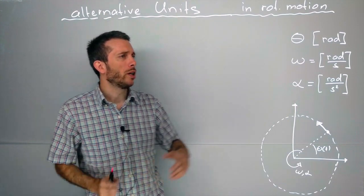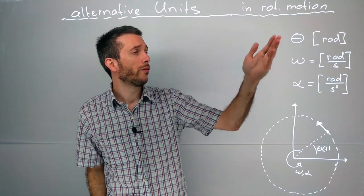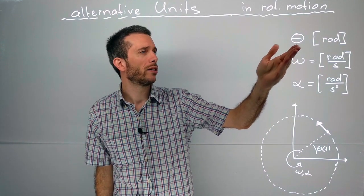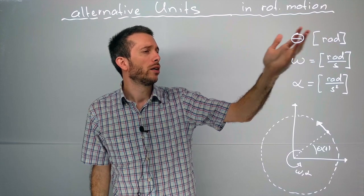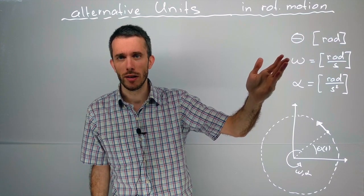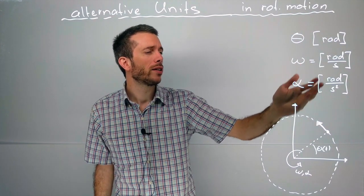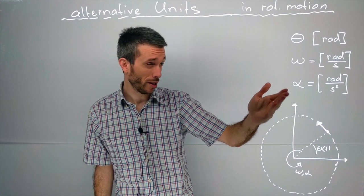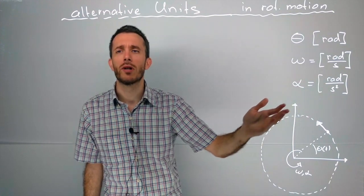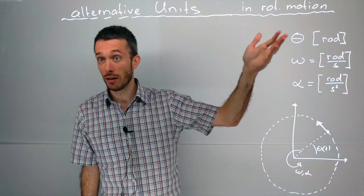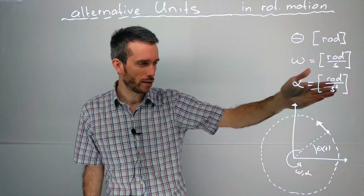Let's just quickly review. In rotational motion, we give the position as an angle in radians, the angular velocity in radians per second, and the angular acceleration as radians per second squared. So basically, our SI units are all based on radians.